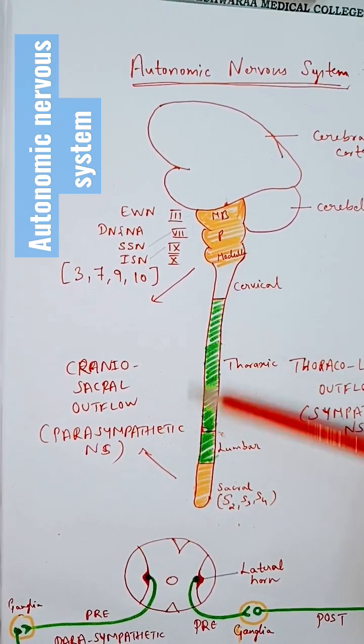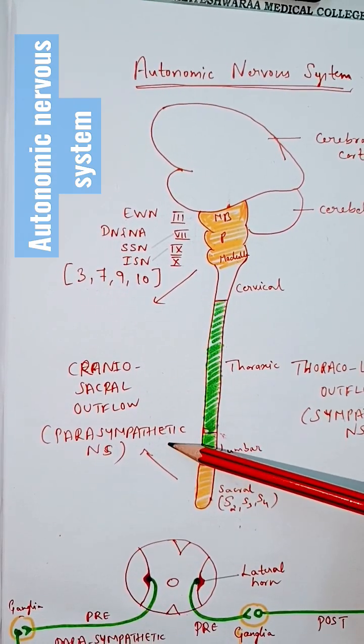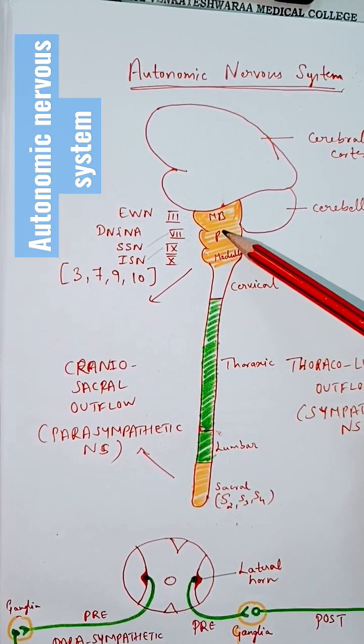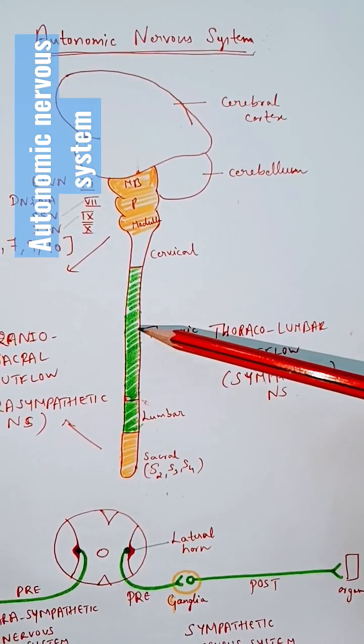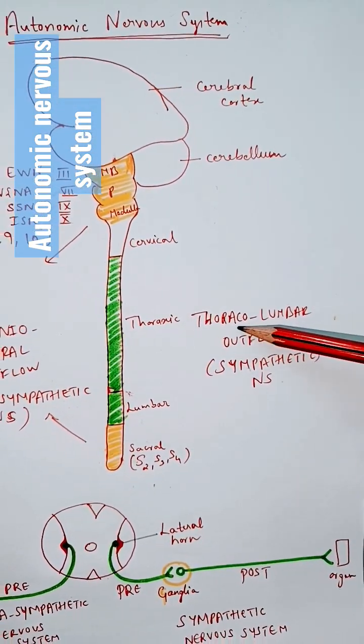That's why we call craniosacral outflow parasympathetic in nature. Remember, it is not the cervical—it is the cranial nerves which are parasympathetic in nature. If you see here, thoracic and lumbar segments, that is nothing but thoracolumbar outflow.